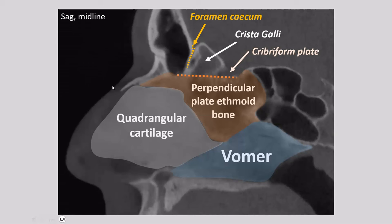Then we have the Haller cells. These are not infrequent, but reported prevalence varies incredibly — from 2 to 42% — depending on when people start calling them. They are basically ethmoid air cells located along the medial wall and floor of the orbits. In this case they are pretty big. They can narrow the ostiomeatal complex due to their location, and they also pose a surgical risk: the otolaryngologist may not realize these cells are contacting the orbital floor, and when being insufficiently careful might cause inadvertent perforation of the medial or inferior wall of the orbit, with potential for an orbital hematoma or other complications.